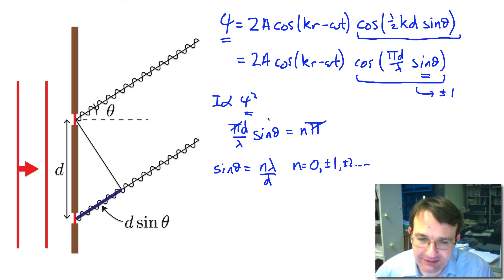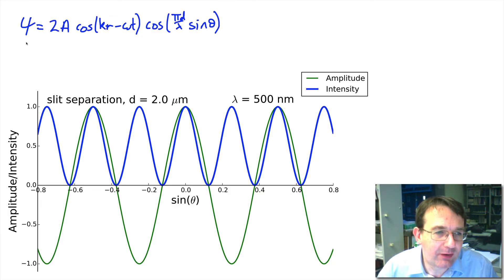We're going to have a very different pattern so let's look at that. Here we have a plot of the amplitude psi, which I've written out here again, versus the sine as a function of sine theta. This green line here shows you the amplitude psi and the blue line here is the intensity which of course is proportional to psi squared.